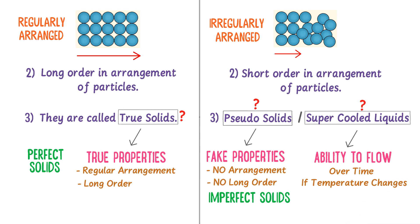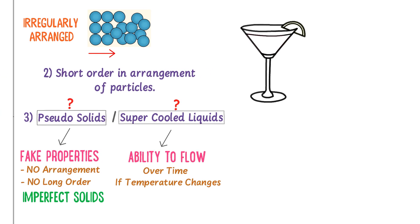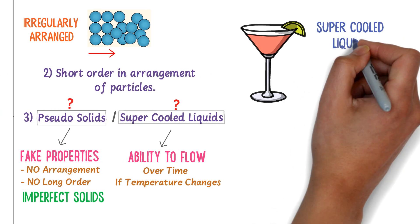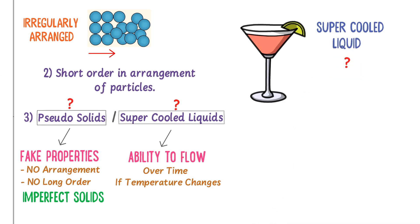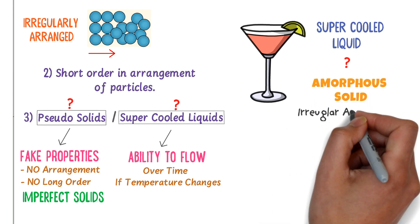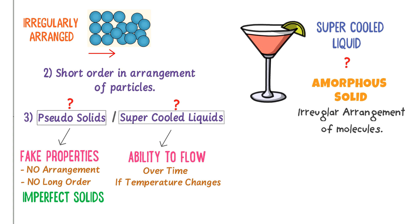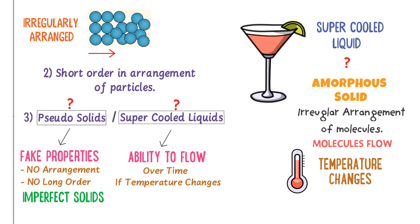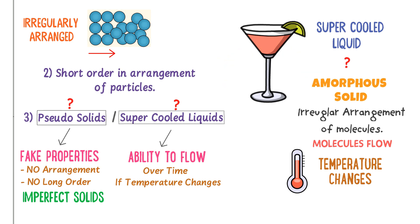Here is one of the most important exam questions: why is glass called a supercooled liquid? Glass is an amorphous solid. Molecules are irregularly arranged in it, due to which molecules can flow if there is a change in temperature. If temperature is increased, glass can flow like a viscous fluid or honey. Therefore, we call it a supercooled liquid.